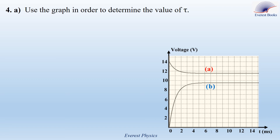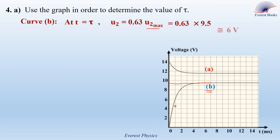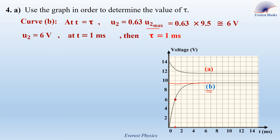Part 4A: use the graph to determine the value of tau. We use curve B. At time tau, 63% of the growth process is completed. Curve B represents the voltage across the resistor, which follows the same shape as the current curve. So at time tau, U2 equals 0.63 times U2 max. The maximum value of U2 is 9.5 volts, so U2 at time tau equals 6 volts. From the graph, when U2 equals 6 volts, T equals 1 millisecond. Therefore tau equals 1 millisecond.